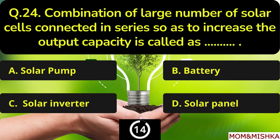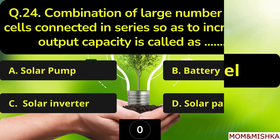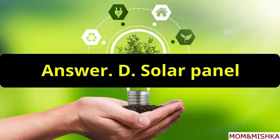A combination of a large number of solar cells connected in series so as to increase the output capacity is called blank. The answer is Option D, Solar Panel.